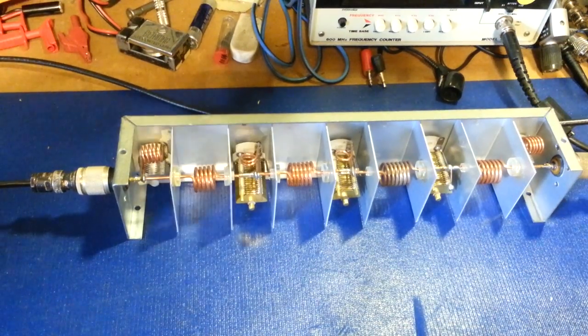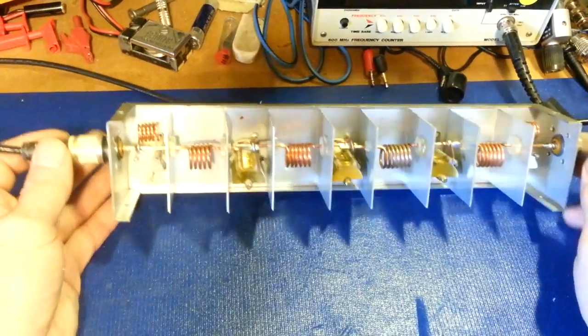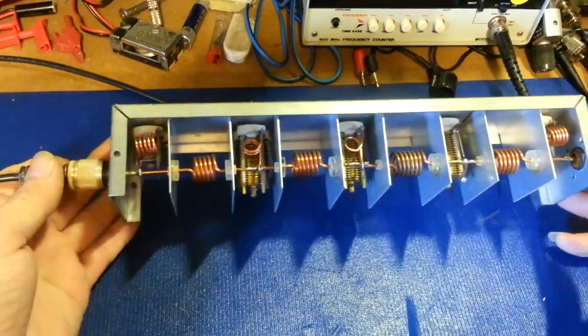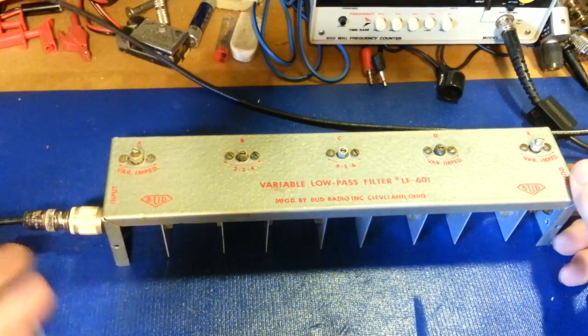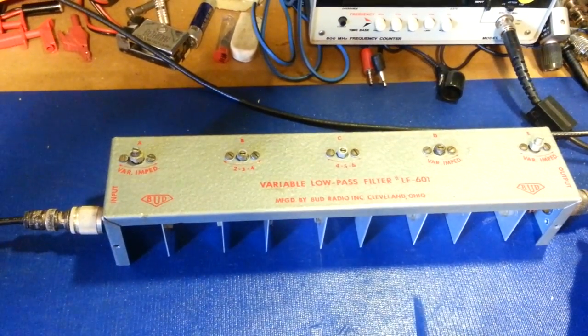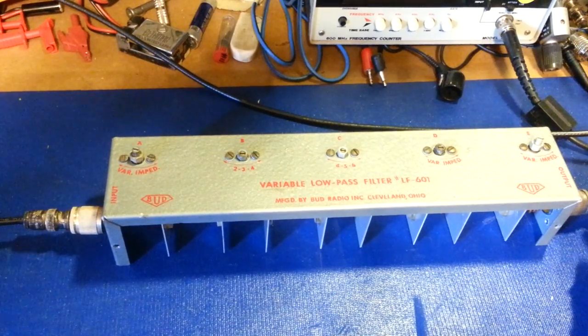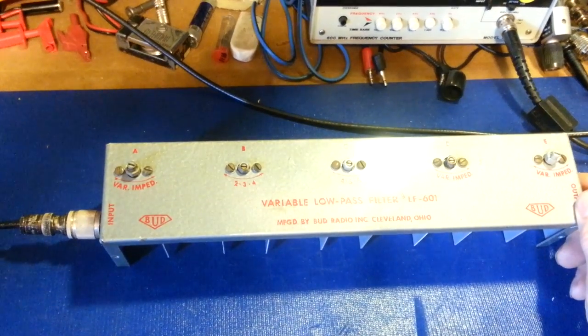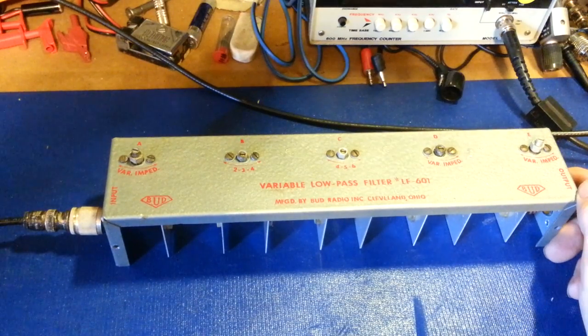In any case, there you go - the Bud LF-601 variable low-pass filter. My opinion is it looks to be a good working filter. Like I said, I'm probably actually going to use this. This might replace an MFJ I actually have currently in line because I really like the variability on this thing. So there you go.